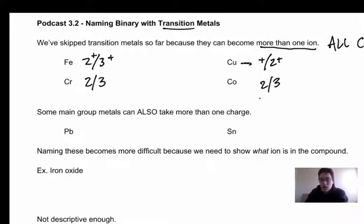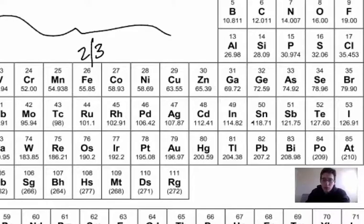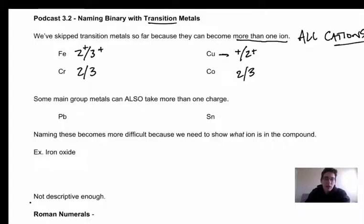Now there are some main group metals that can also take more than one charge, and this is because of the orbitals that it has available to it. I'm not going to get really into it, but the two you need to know are tin and lead.